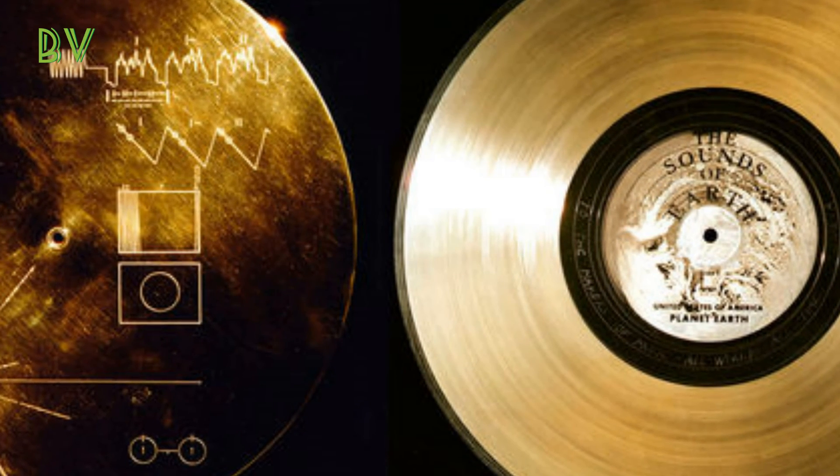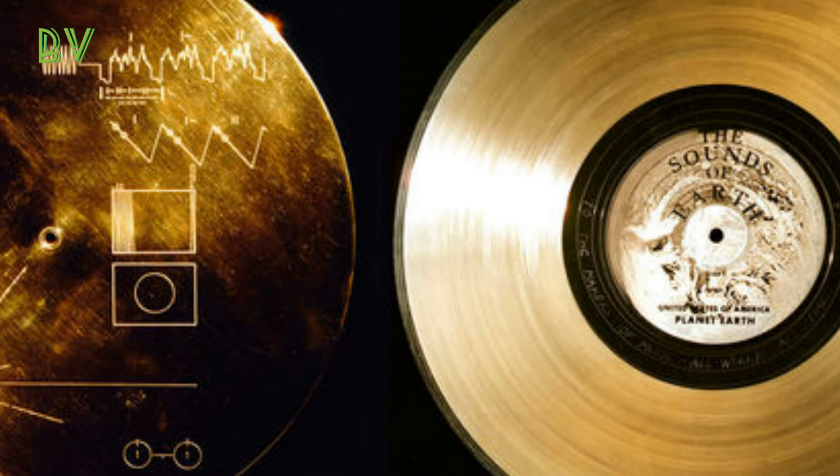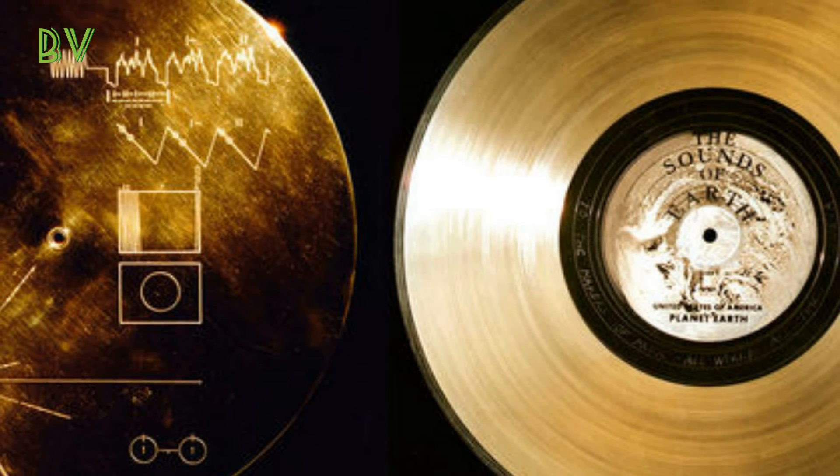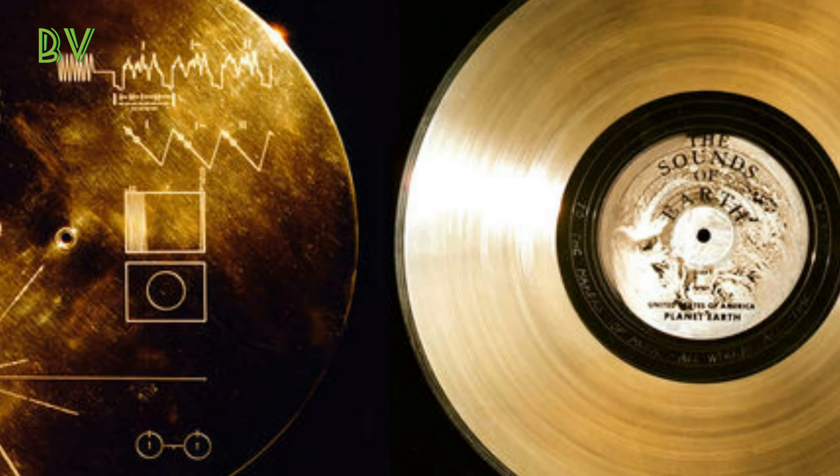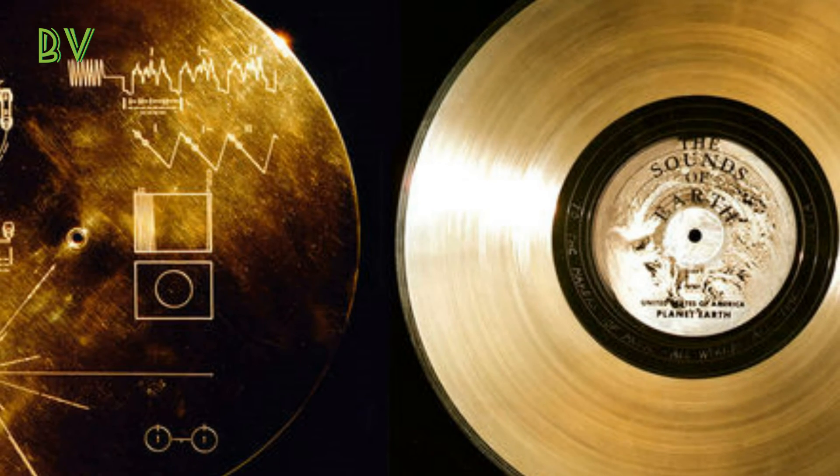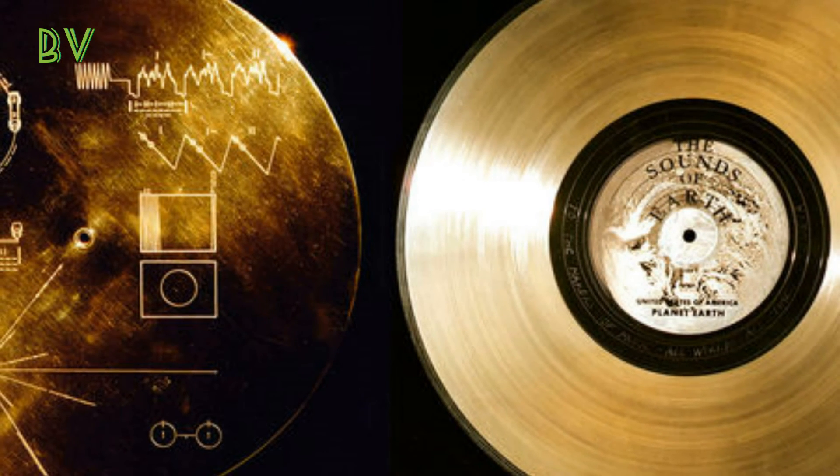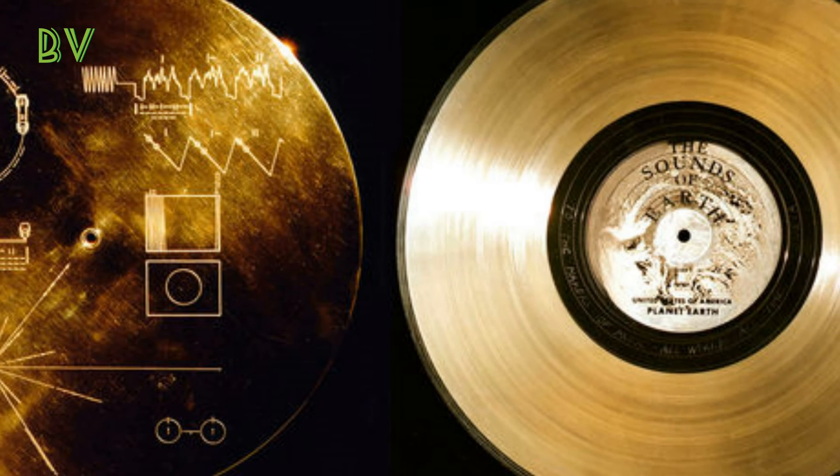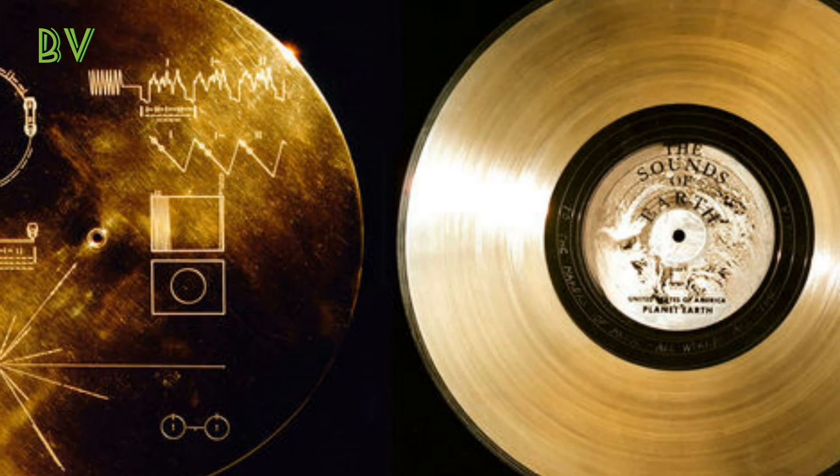The Voyager team is likely to conduct a similar test for Voyager 2, the twin to Voyager 1. That spacecraft's attitude control thrusters aren't yet as degraded as Voyager 1's.